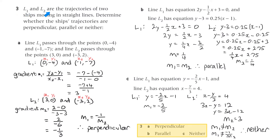Question 3: L1 and L2 are the trajectories of two ships moving in straight lines. Determine whether the ship's trajectories are perpendicular, parallel, or neither. Part a — line 1 passes through two points and line 2 passes through two other points. We need to find the gradients first, using the formula y2 minus y1 over x2 minus x1.